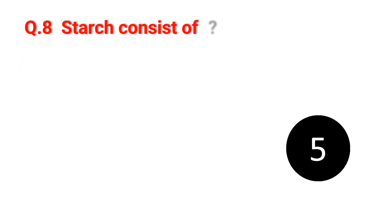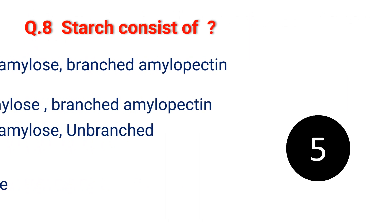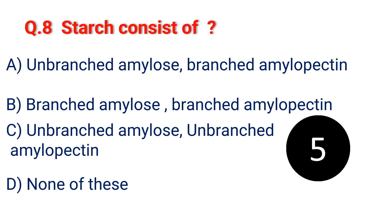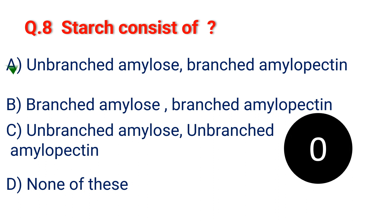Question 8. Starch consists of: A. Unbranched amylose, branched amylopectin. B. Branched amylose, branched amylopectin. C. Unbranched amylose, unbranched amylopectin. D. None of these. The answer is A. Unbranched amylose, branched amylopectin.